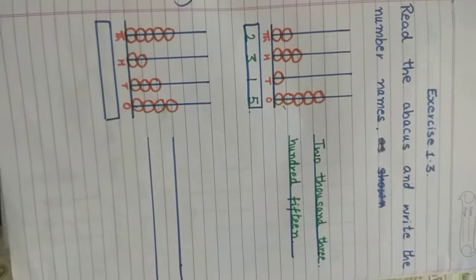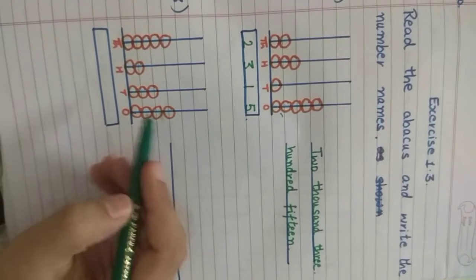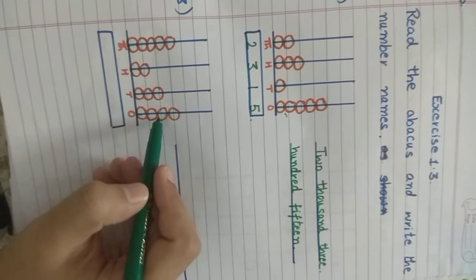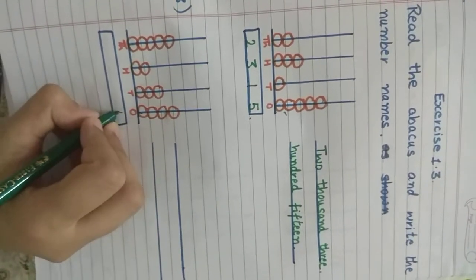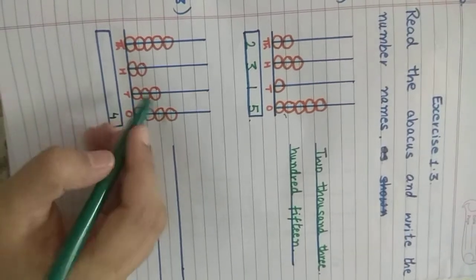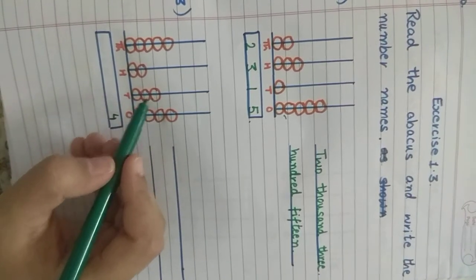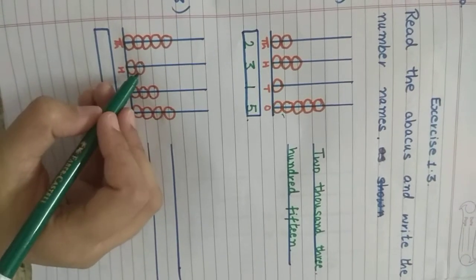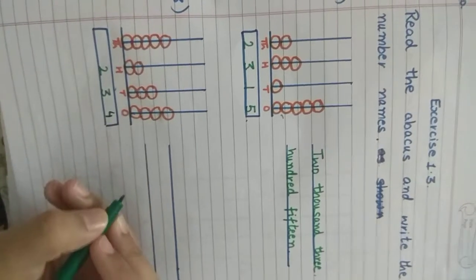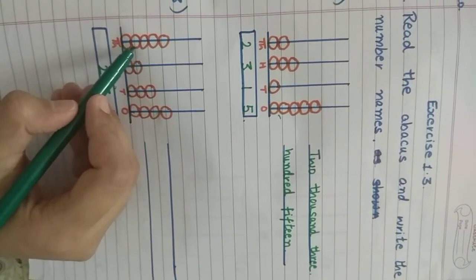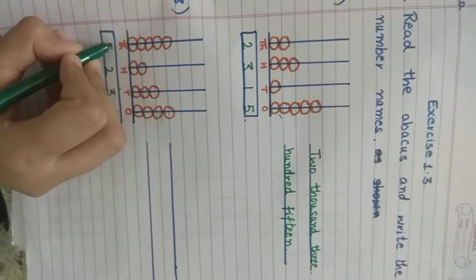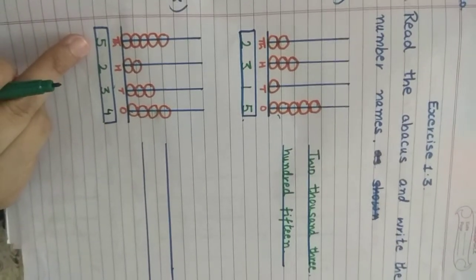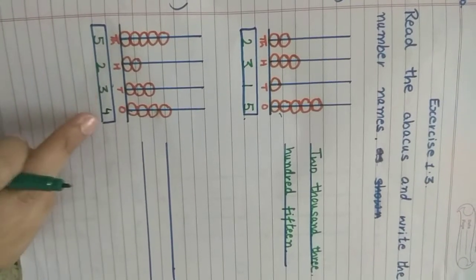What is the next one? Shall we start? Start from 1s and count the number of beads: 1, 2, 3, 4 — 4 beads of 1s. Then 1, 2, 3 — 3 beads of 10s. Then 1, 2 — 2 beads of 100s. Then 1, 2, 3, 4, 5 — 5 beads of 1000s. So the number formed is 5,234.